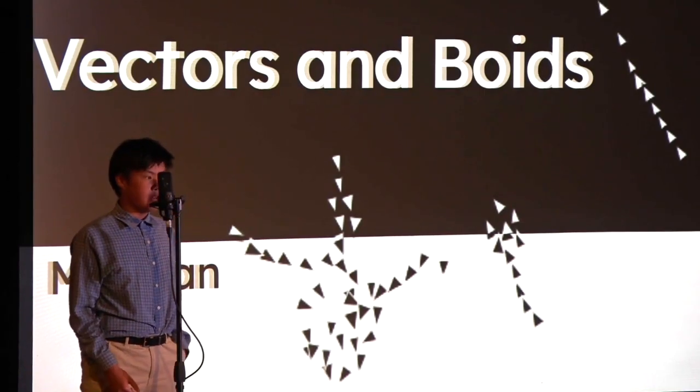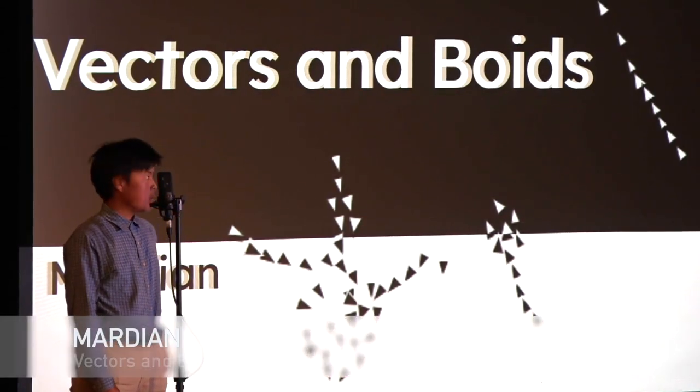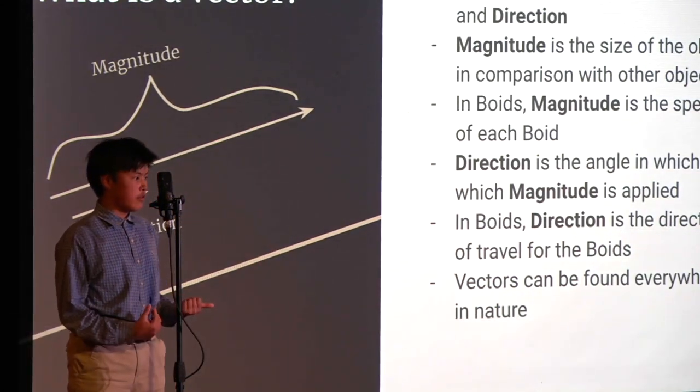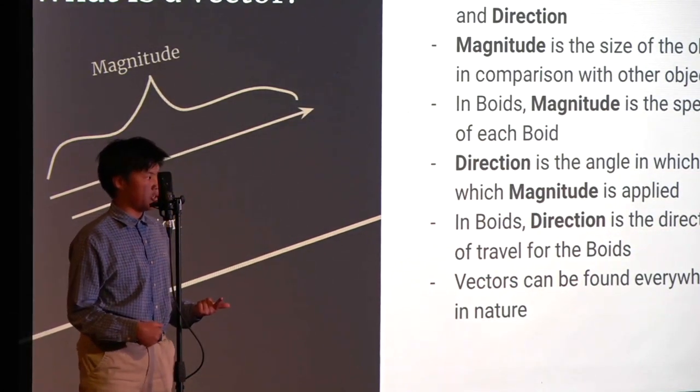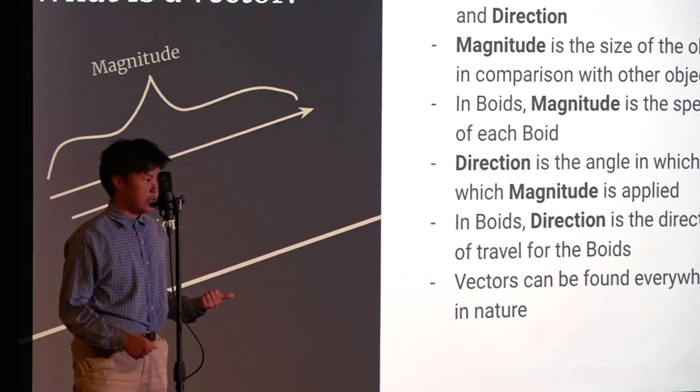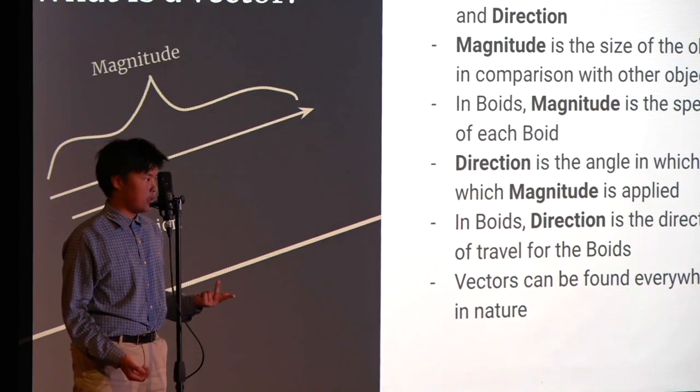Today I'll be talking about vectors and boids. A vector is anything with both magnitude and direction. Basically everything you can think of is a vector, like gravity, a planet's orbit, a bullet. They're all vectors.